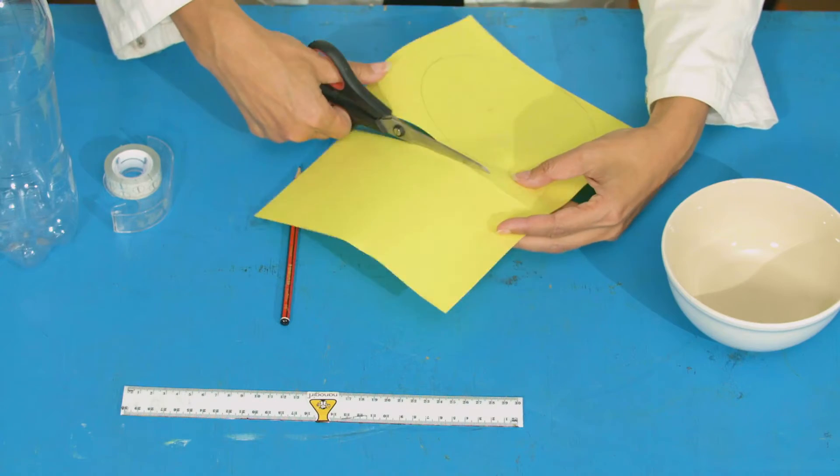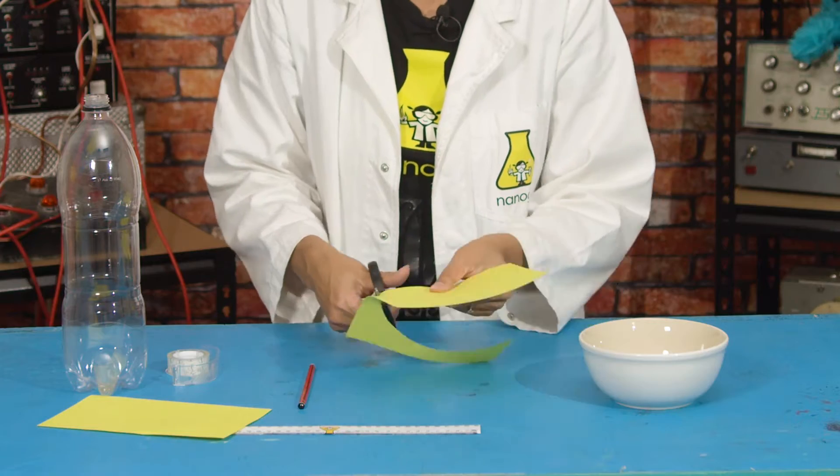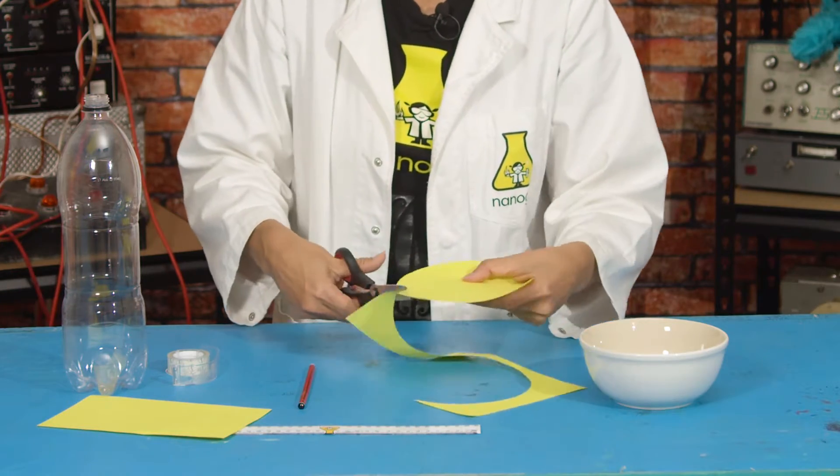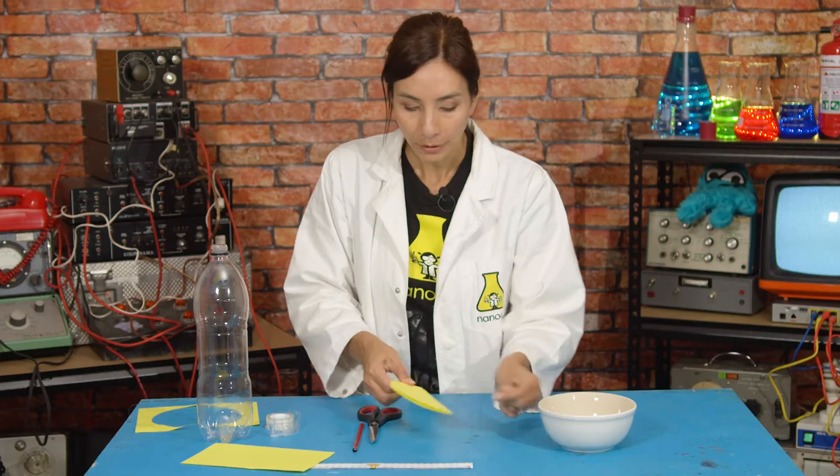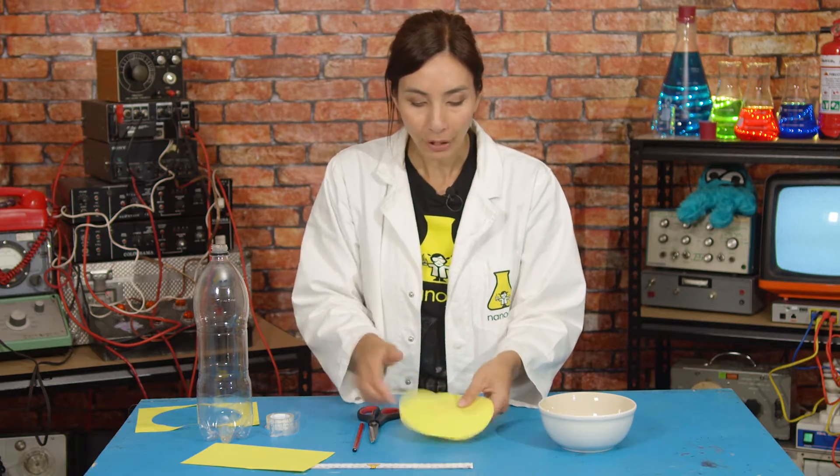Then we're going to cut out our circle. You're going to fold your circle in half so you have a crease, and then cut down that crease so you've got two semicircles.